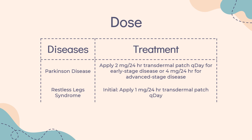Dosing for restless leg syndrome — Initial: Apply 1 mg per 24 hours transdermal patch once daily. May be increased as needed by increments of 1 mg per 24 hours at weekly intervals as tolerated. Not to exceed 3 mg per 24 hours once daily. To discontinue, reduce dose gradually no faster than 1 mg per 24 hours every other day until completely withdrawn.